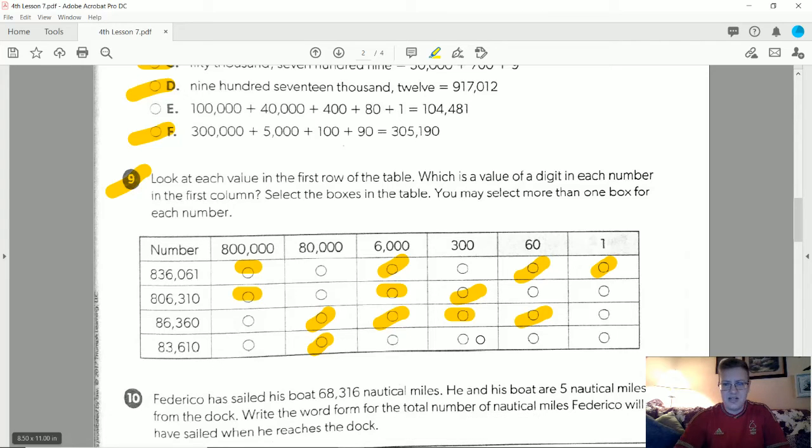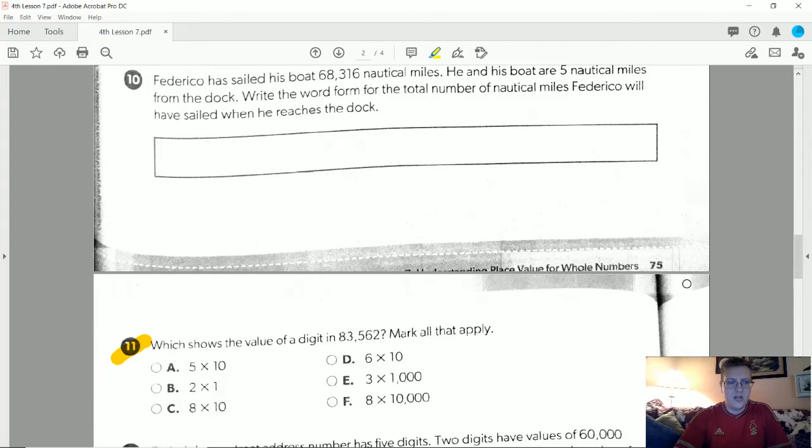The bottom one, I have 80,000, I do not have a 6,000, I do not have a 300, I do not have a 60, and I do not have a 1, so this would be our only option for the bottom one on number 9.